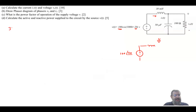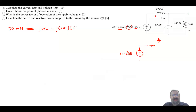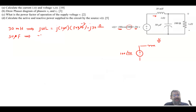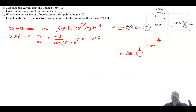The inductor is 30 millihenry, converted to a reactance: jωL = j × 1000 × 30 × 10⁻³ = j30 ohms. The capacitor is 50 microfarad, converted to −j/(ωC) = −j/(1000 × 50 × 10⁻⁶) = −j20 ohms. So we now have j30 for the inductor and −j20 for the capacitor, both in ohms.